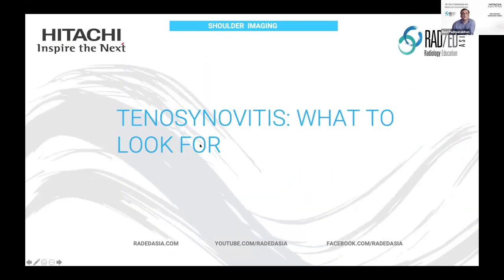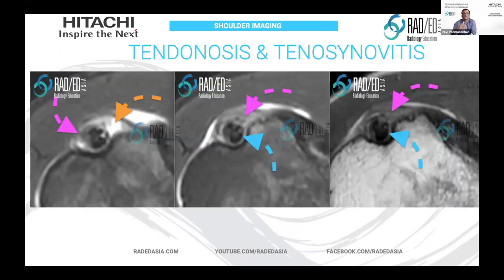So what about tenosynovitis? We said that it's normal to have a little bit of joint fluid. Tenosynovitis can be uncomplicated in the sense that there's just more fluid in the biceps tendon sheath, or you can actually get inflammatory changes and actual synovitis where we get altered signals. The orange arrow is pointing to normal signal within the biceps tendon sheath — it should be bright.